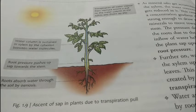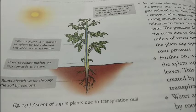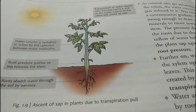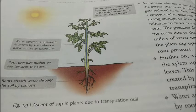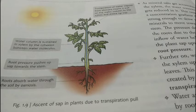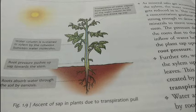Hello class 8, today we are going to study about ascent of sap. Ascent of sap is the upward movement of water and minerals from the roots to the upper part of the plant body with the help of xylem.